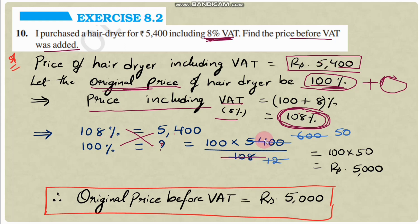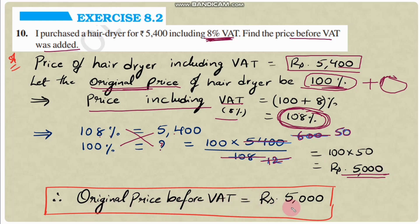Cancelling out: 9 divides into 108 giving 12, and 9 divides into 5400 giving 600. Then 12 divides into 600 giving 50. So 100 × 50 = ₹5000. Therefore, the original price before VAT was ₹5000.